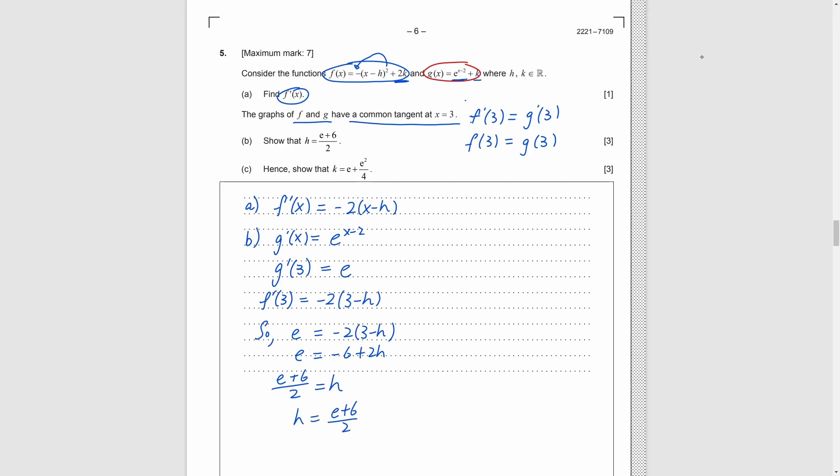Part C. So, k is equal to something. Obviously, we need to use the second equation we wrote. f(3) is equal to g(3). By substitution, we can get g(3) and f(3). Set them equal to each other. Without making calculus mistake, we find k.